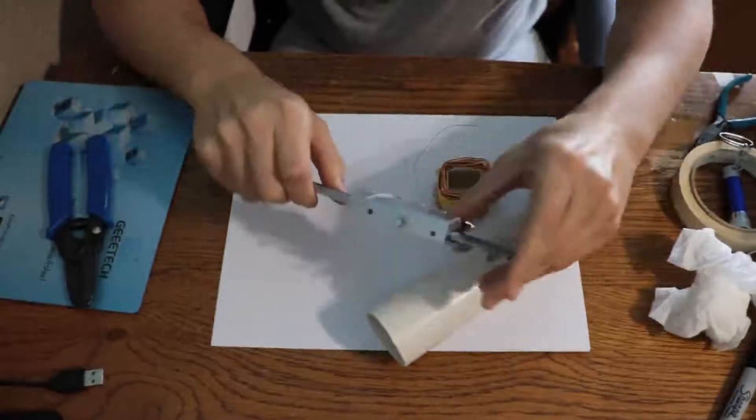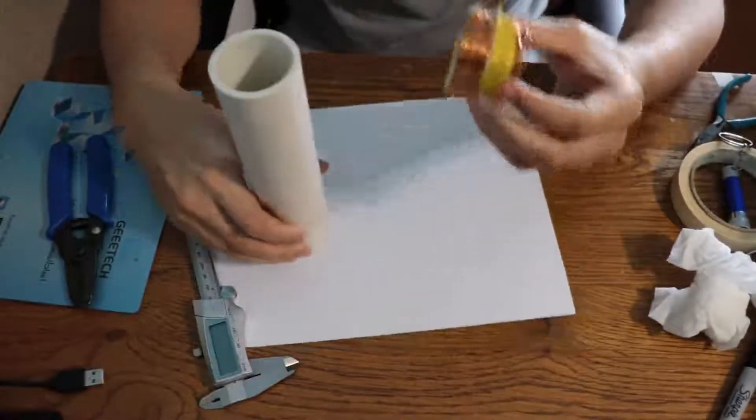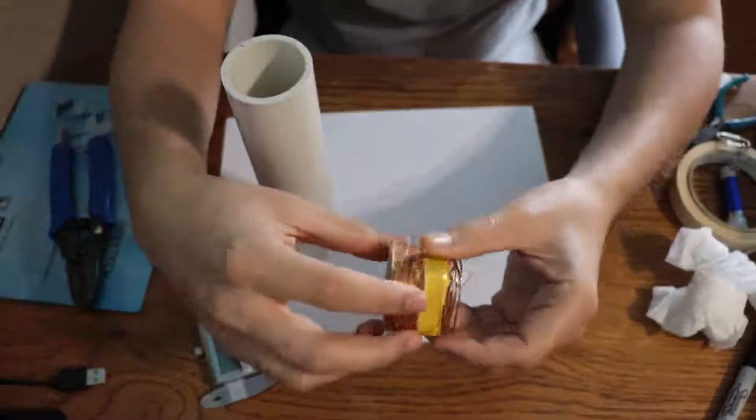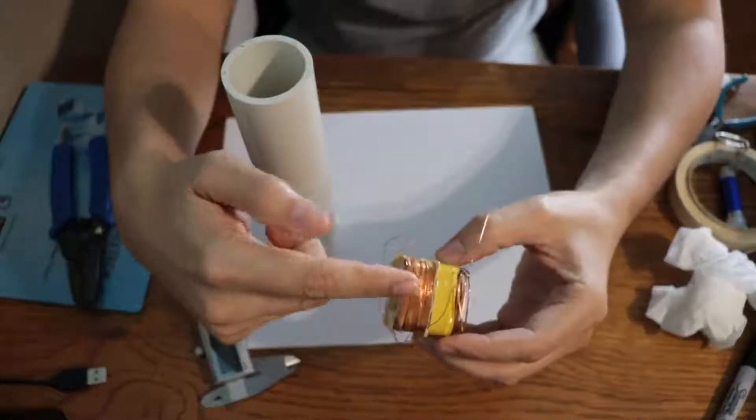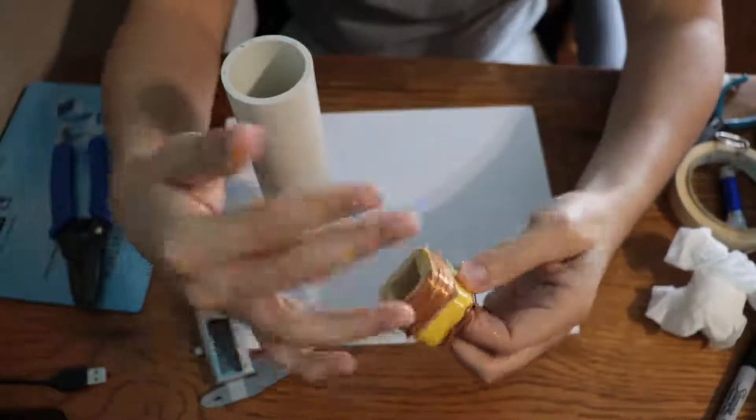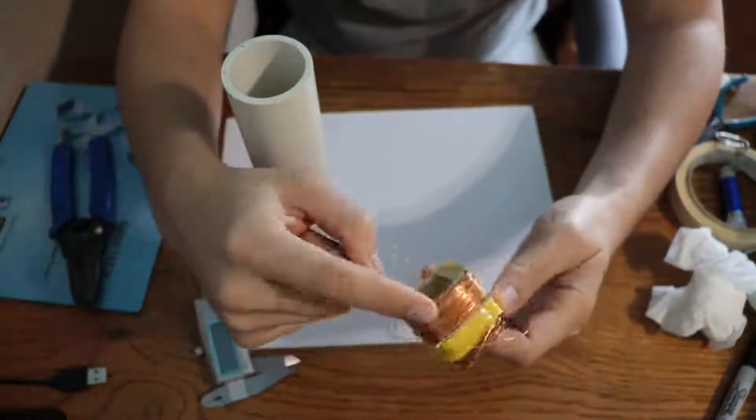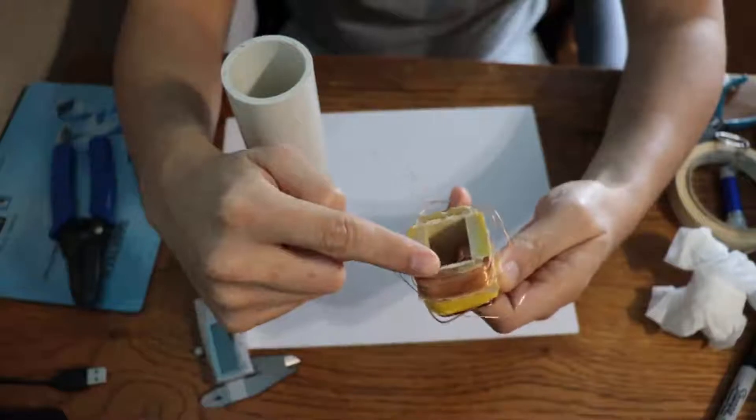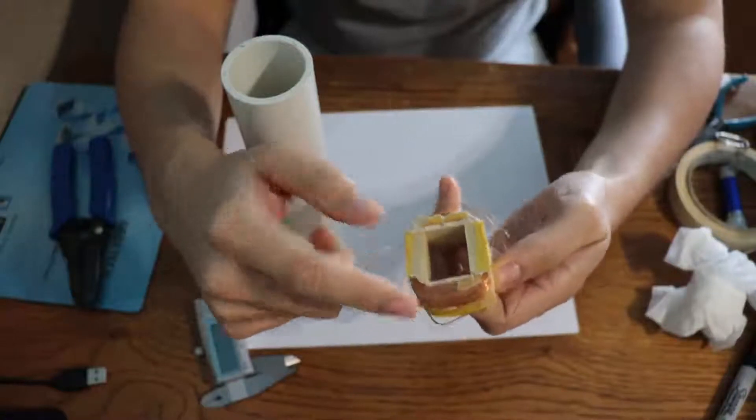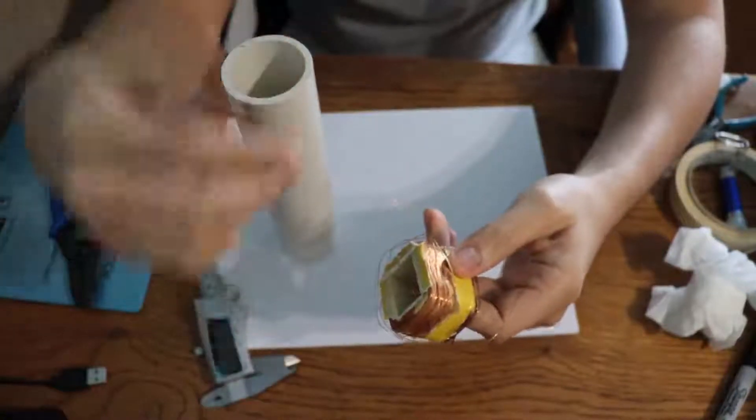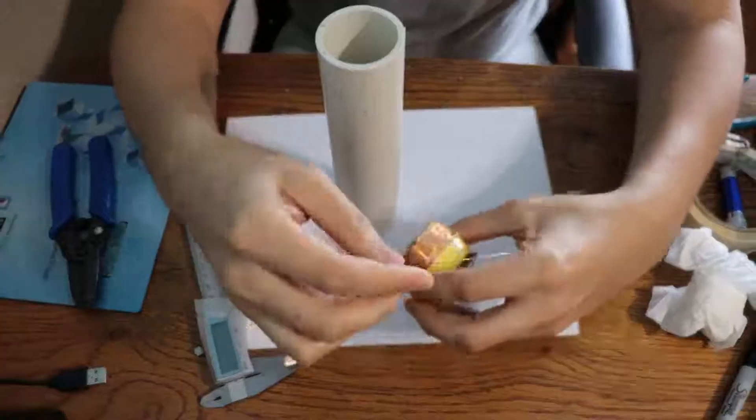So the other thing that we're using is this secondary or primary of a transformer that we broke earlier. And the reason why we're doing this is because as you can see we have a lot of copper there. And I'm just going to wind. I'm not going to count it.